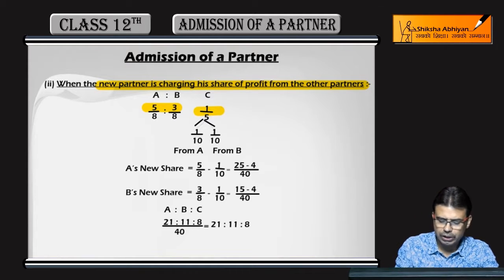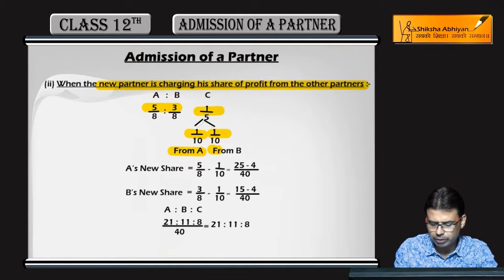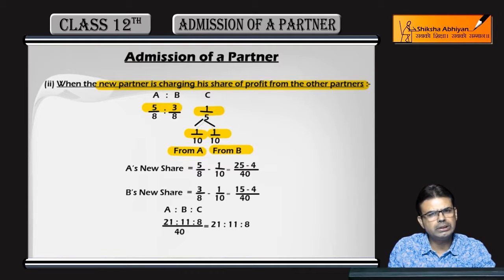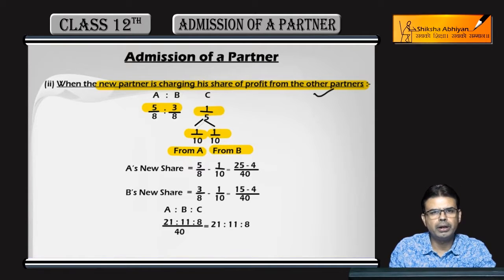But you are clearly saying that in this case, 1 tenth will be A and 1 tenth will be B. So it is clearly mentioned that he is charging it from the other partners.